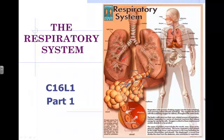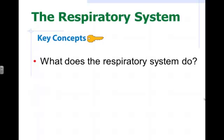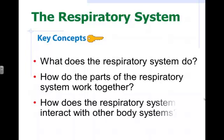Our next system to study in the human body is the respiratory system, and I've divided this into three different parts so that you just have a little each night. The key concepts to remember over these three lessons are: what does the respiratory system do, how do the parts of the respiratory system work together, and how does the respiratory system interact with other body systems to maintain homeostasis.